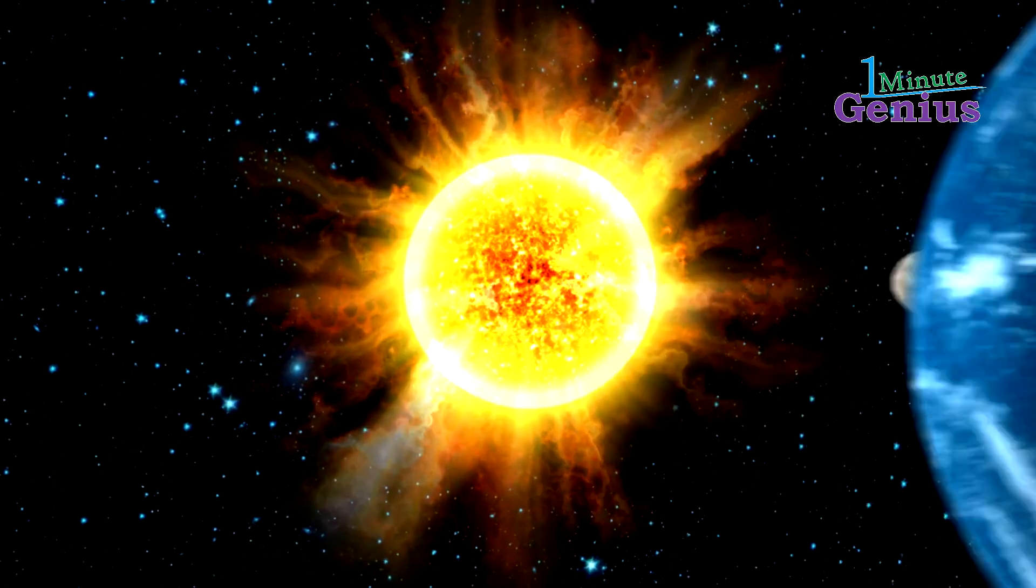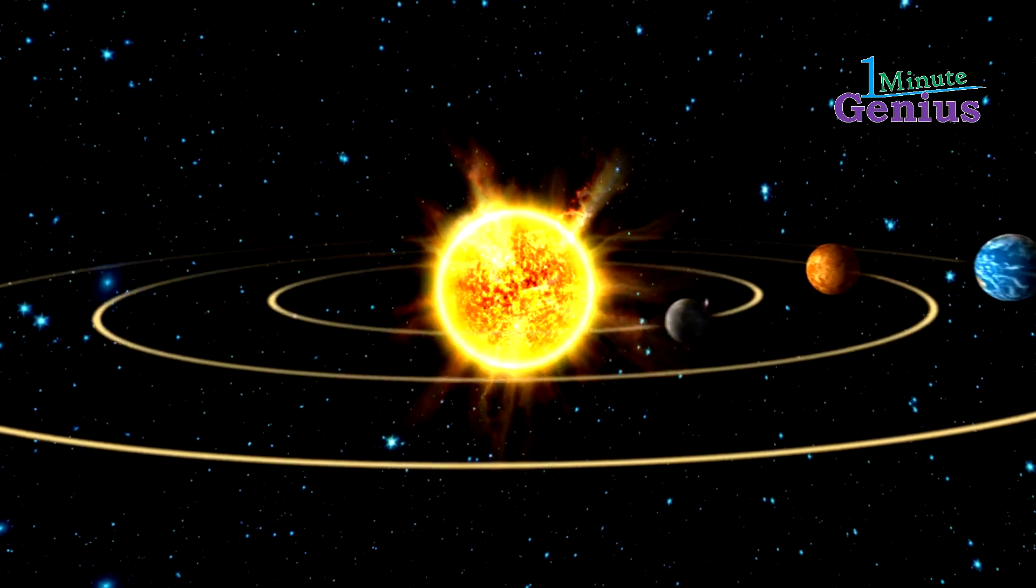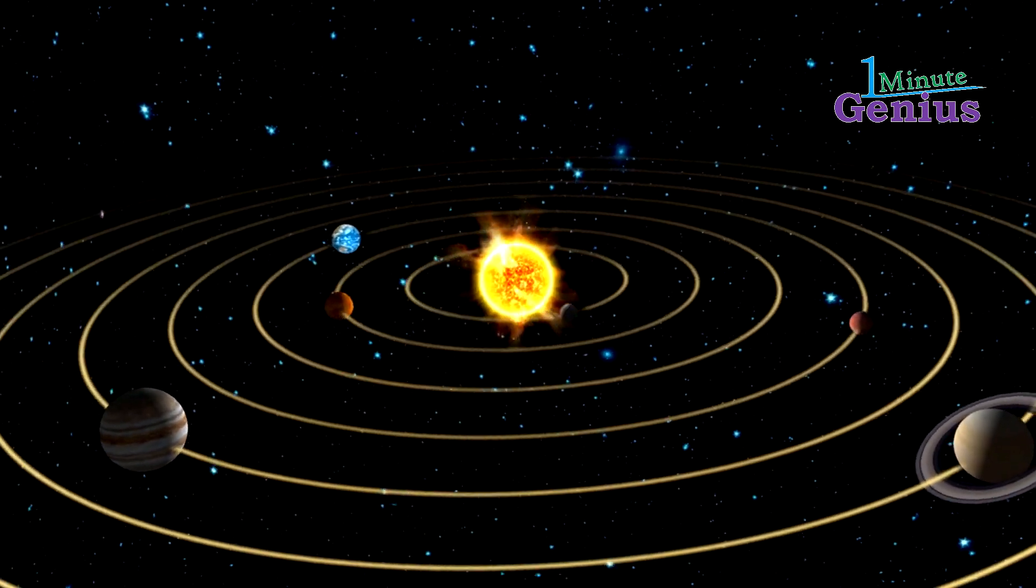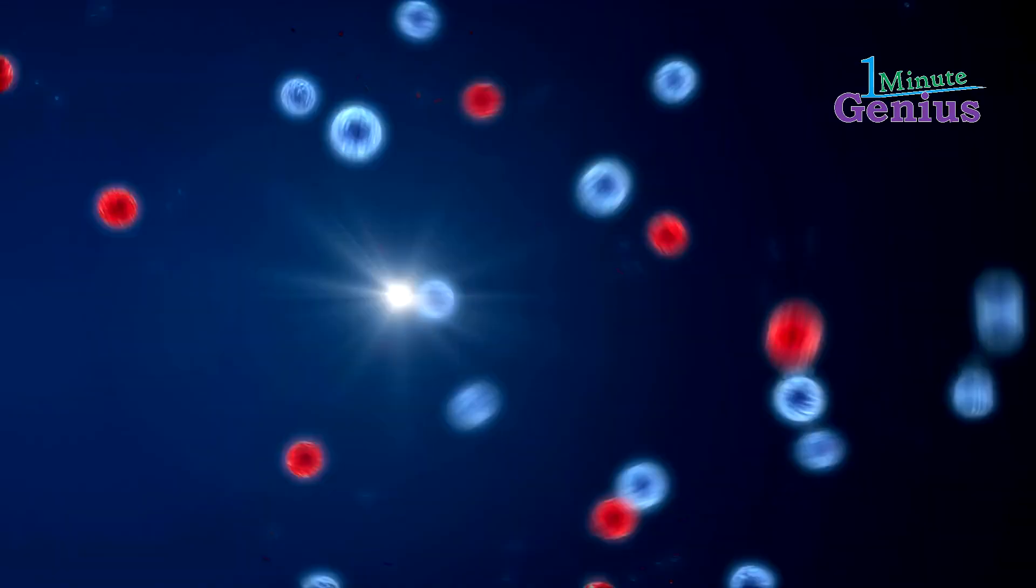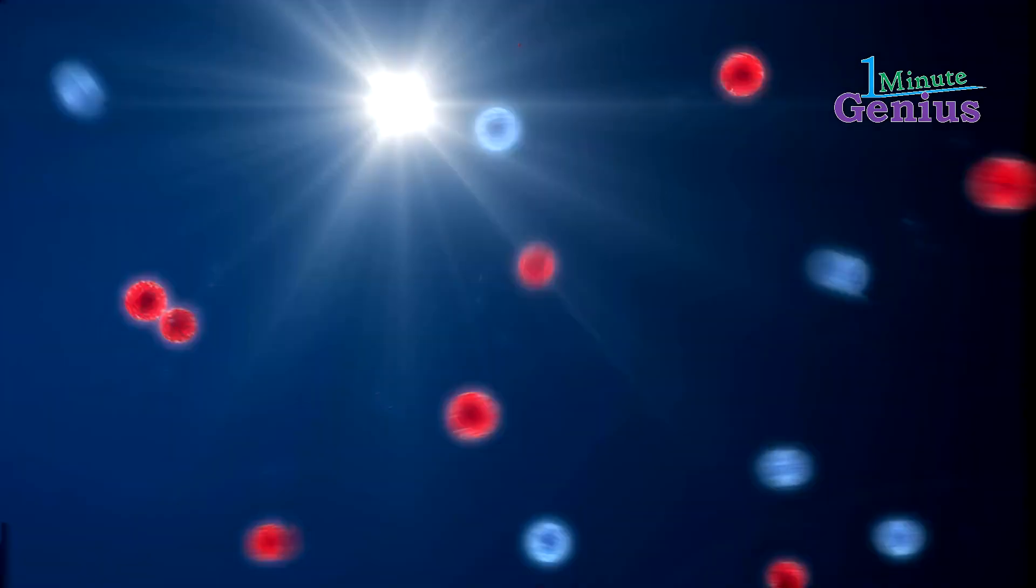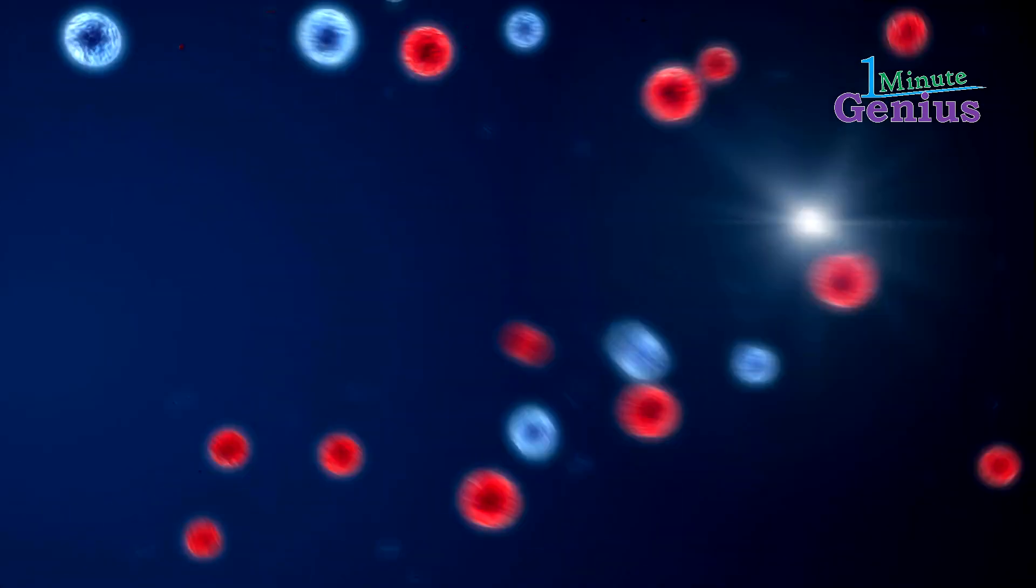Located at the center of the system, the Sun's intense gravitational pull keeps planets, moons, and other celestial bodies in orbit. Its immense energy is generated through nuclear fusion in its core, where hydrogen atoms fuse to form helium, releasing a tremendous amount of light and heat.